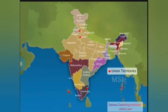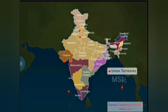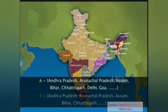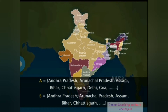Observe this map of India. It shows all its states and union territories. We can write all the states and union territories as a set — let us call this set A. We can even make a set of all states. This set will however be smaller than the set of all states and union territories.